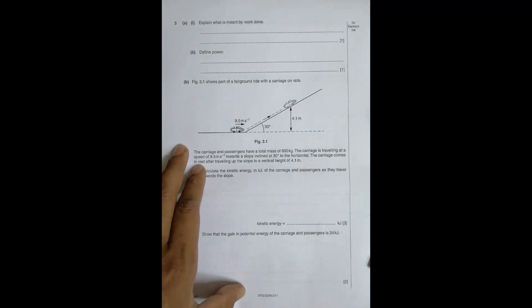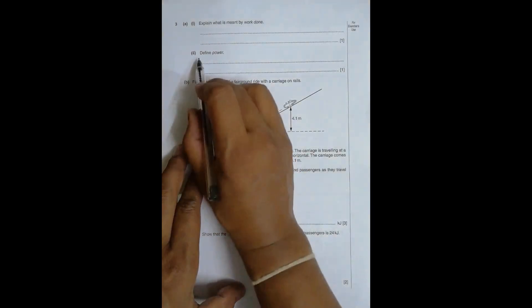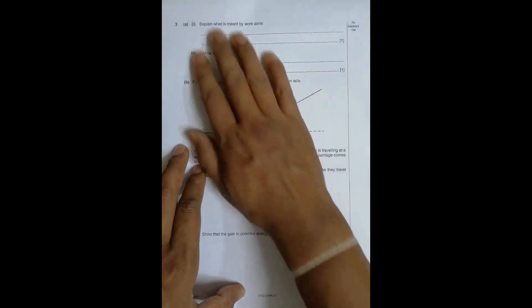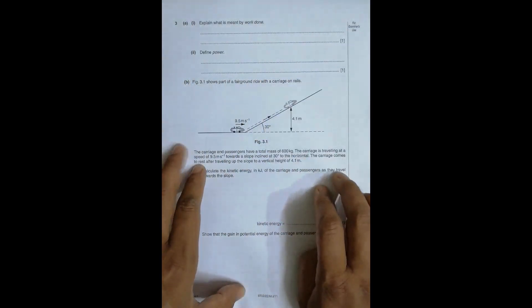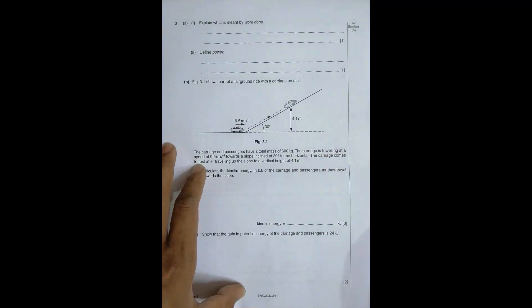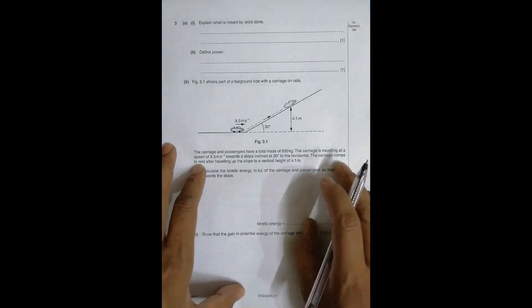The first question says explain what is meant by work done. Work is said to be done when a force applied on a body produces some displacement in its direction. So the formula becomes W = F × d × cos(θ), where θ is the angle between the direction of force and displacement. Power is equal to rate of doing work, or simply work done divided by time elapsed.